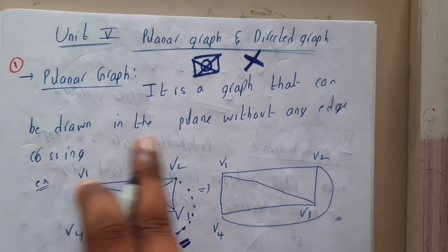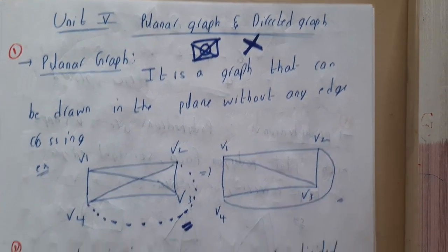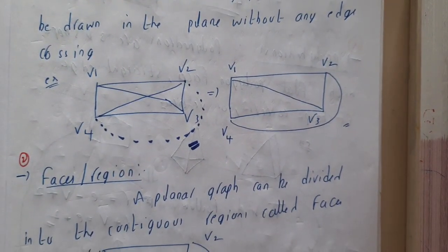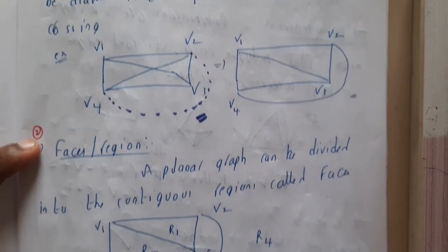It is a graph without any crossing of edges is a planar graph. So I hope everyone got a clear idea about planar graphs. In the next lecture, we'll be going through faces and regions. Thank you, thanks for watching.